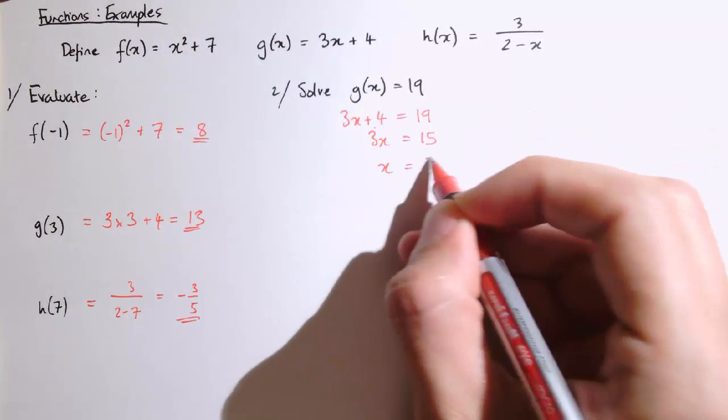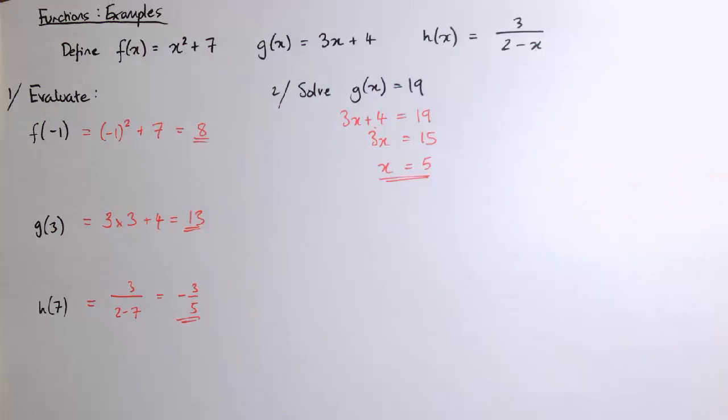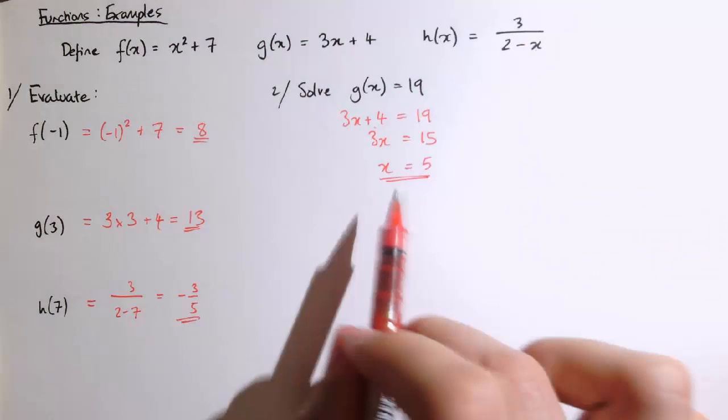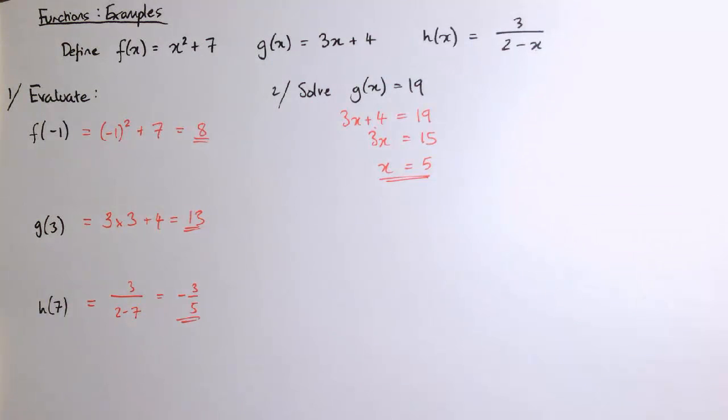And we can just check back in here. If we do 3 times 5 plus 4, that gives us 19. So we have found the input that has output 19.